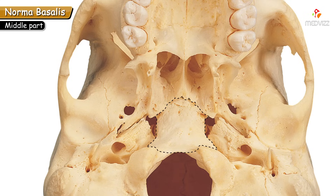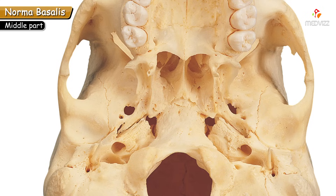The inferior surface of the sphenoid and basi-occiput is marked by a median bony projection known as the pharyngeal tubercle. Now we look at the lateral areas of the middle part of norma basalis.